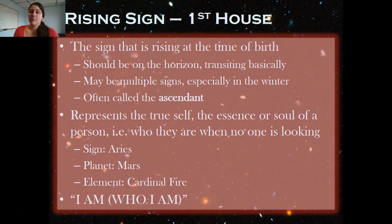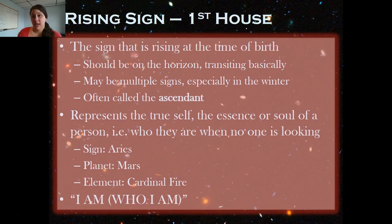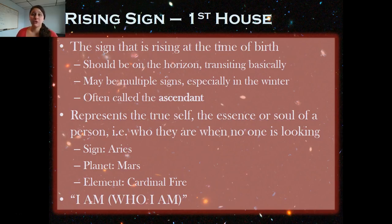Each house has a modality that matches the sign that rules that house. When you do the actual star chart, the sign in the rising house may not be Aries — Aries rules the first house normally — but depending on what time of day you were born, it could be a different sign. The houses are probably going to be consistent whether you get your data from an astrology tool. Astrology tools often have inaccurate planetary data because they don't account for planetary precession, which is why we use an astronomy tool like Stellarium. But the rising sign should be consistent.